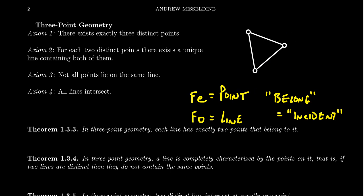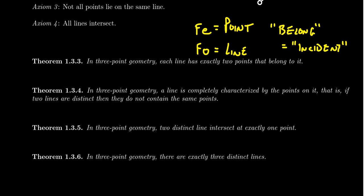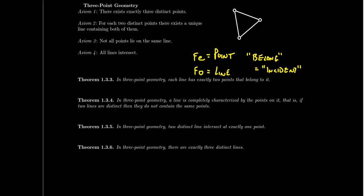Now let's look at those four theorems. In three-point geometry, the first theorem states that each line has exactly two points that belong to it. You'll notice this line has two points, this line has two points, and this line has two points — it's very easy to see from the model. But if we want to prove it from the theory, we need to prove it from the axioms, because how do we know there aren't different models than this one?